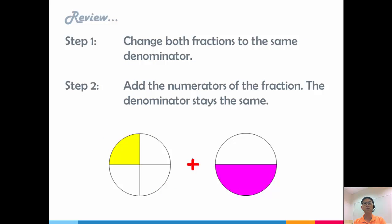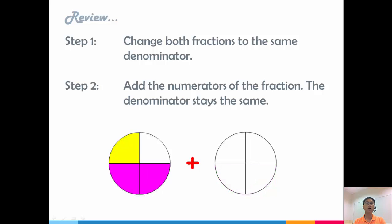So let's review. Step 1, we change both the fractions to the same denominator. Step 2, we add the numerators. The denominator stays the same because the whole remains the same. If I have 4 equal parts, I should have 4 equal parts after that.